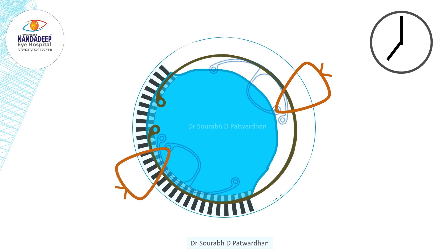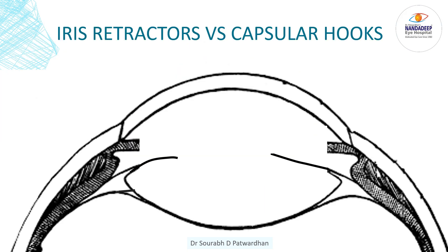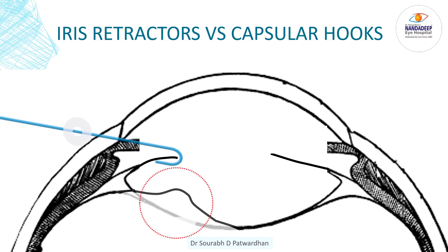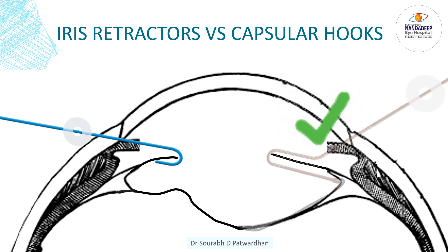Another important issue is whether to use iris retractors or capsular hooks to stabilize the bag. When we use iris retractors, the main support is given to the anterior capsule, but the posterior capsule remains unsupported and during FACO the posterior capsule may come into the FACO probe. In case of capsular hooks, because they are longer and support the equator of the lens, the posterior capsule is also well supported. So a capsular hook is always preferred over iris retractors for supporting the bag.